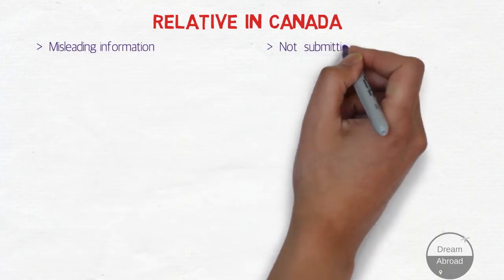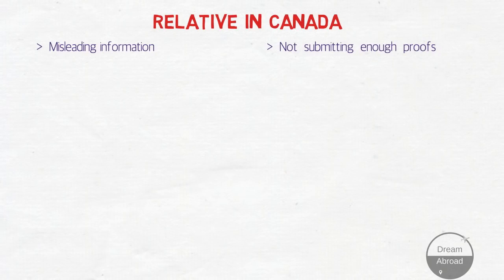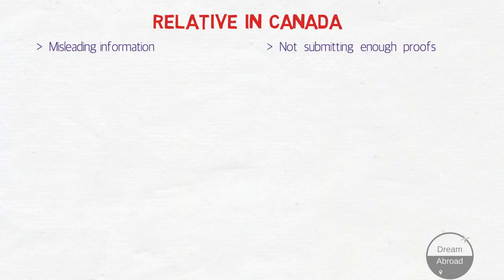Relatives in Canada: some provinces like Saskatchewan and Manitoba give additional points for relatives in Canada. If you provide misleading information about having a relative there, your application is in trouble. Make sure you can arrange the required list of documents proving your relative is in Canada before you nominate them, since you receive additional points for that.